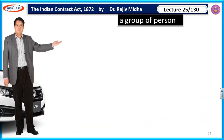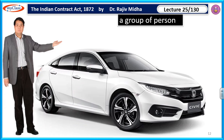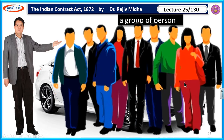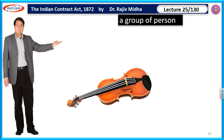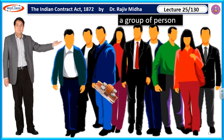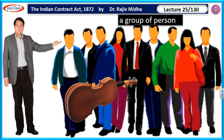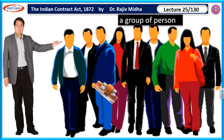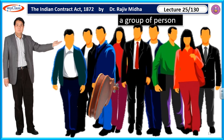Second case: Mr. S wants to sell his car and he gives an offer to a group of persons. Any one person from this group can accept this particular offer. This offer will be termed as specific offer. Another example: Mr. Seller wants to sell his guitar and he gives his offer to a group of persons — 'I want to sell you my guitar. If you want to buy this guitar for Rs. 20,000 you can buy it.' Now this offer is to a particular group of persons. Any person from this particular group can accept this offer and no one else can accept the offer.